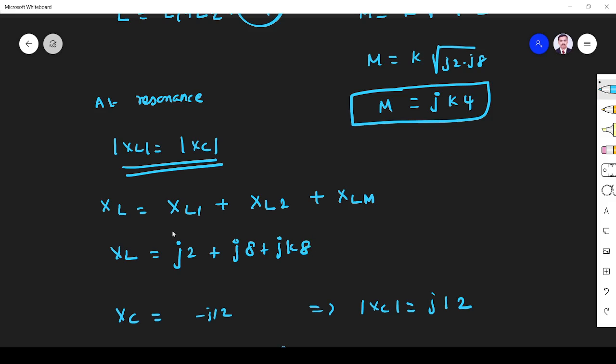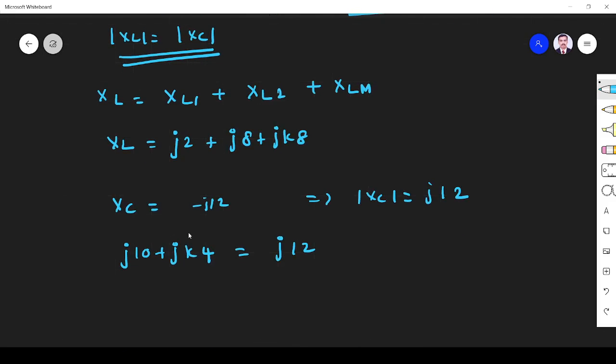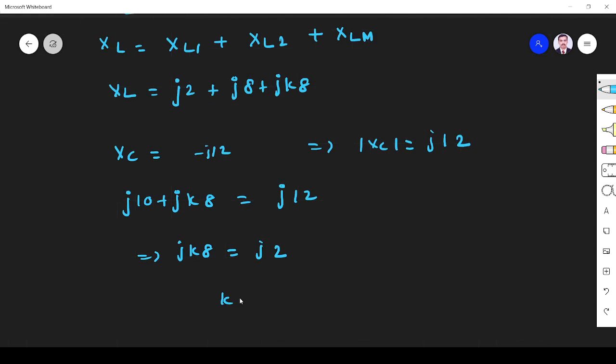So from the corrected equation: j10 + jk8 = j12. This implies jk8 = j2, therefore k = 1/4 = 0.25.